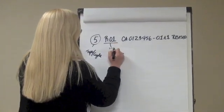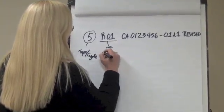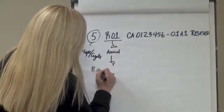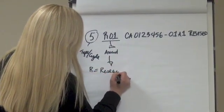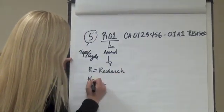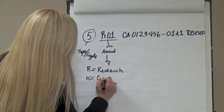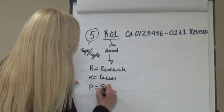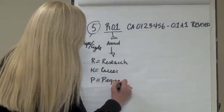This refers to the award and that's where you're going to talk about if it's an R, it's research. If it's a K, it's career. I almost spelled career with a K. If it's a P, we can talk about it being a program project or a center.